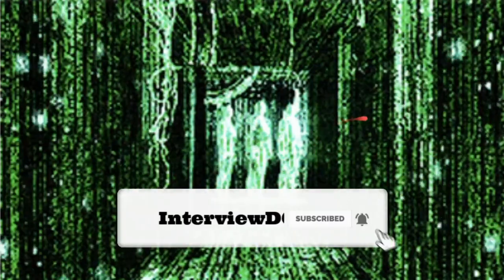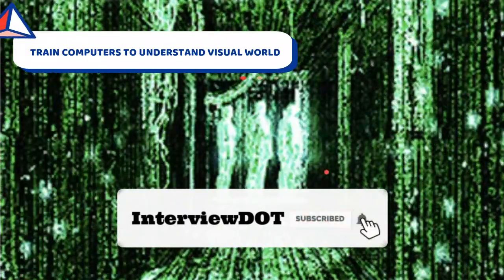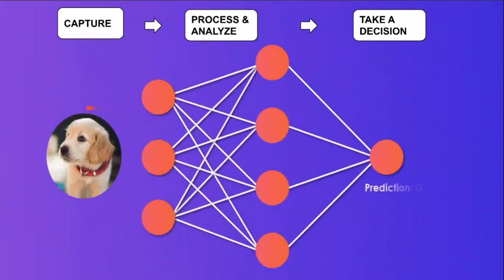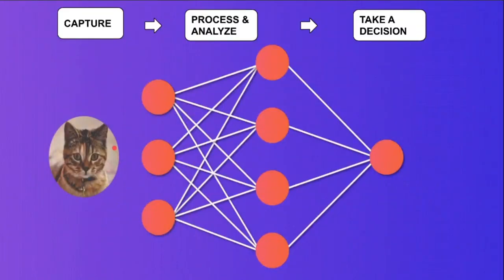So what is computer vision? Computer vision is a field in artificial intelligence that trains computers to understand the visual world. Basically, computer vision is the process of understanding images and videos using computers.